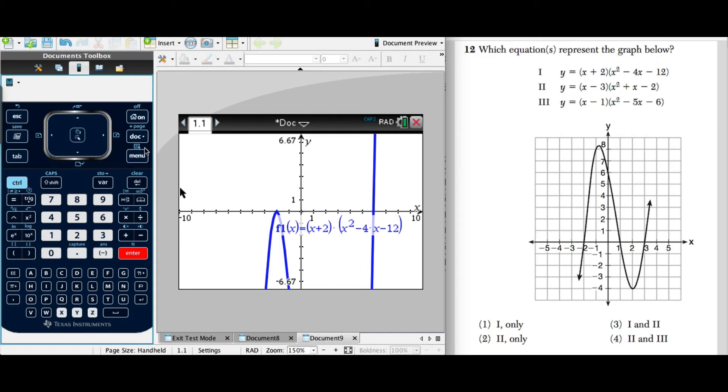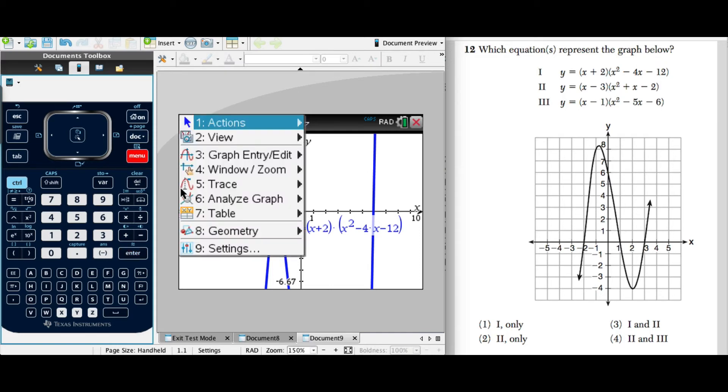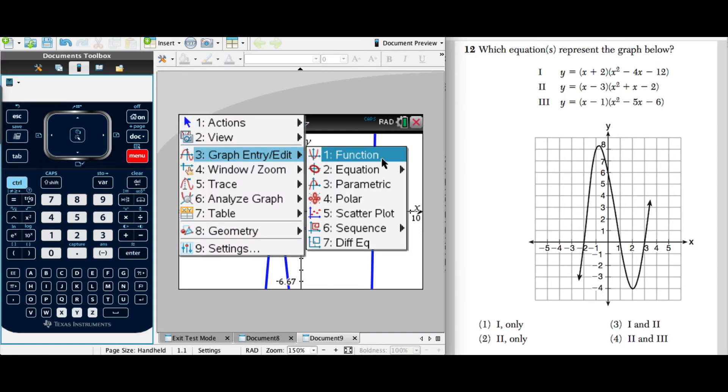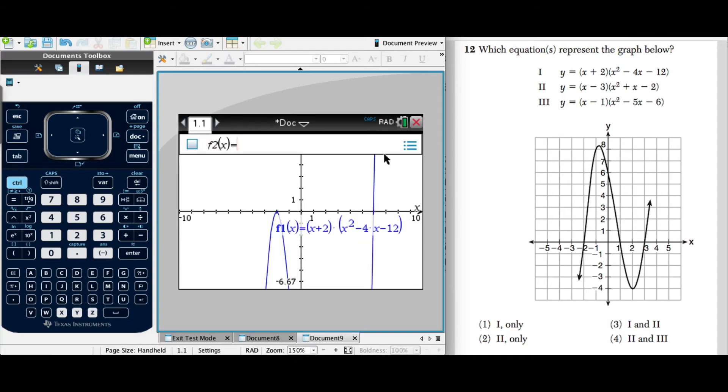So we're going to now plot another graph. We'll hit menu. We're going to go to graph, edit, and put in another function. And now we'll do the next one, which is, we'll get the parentheses, X minus 3.